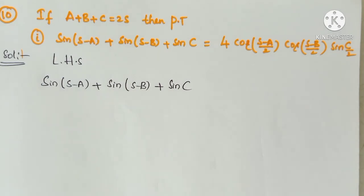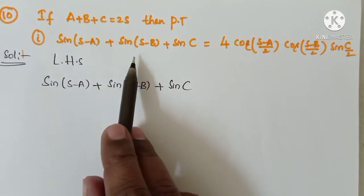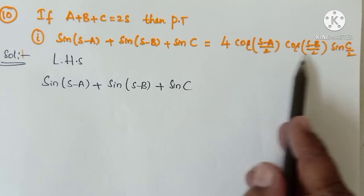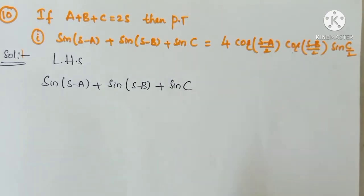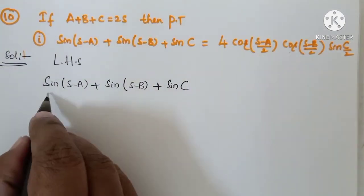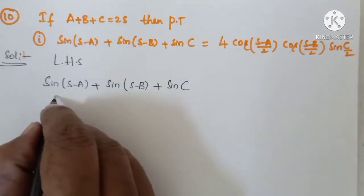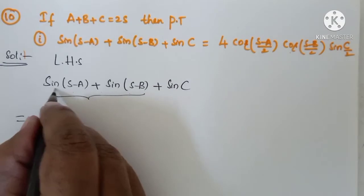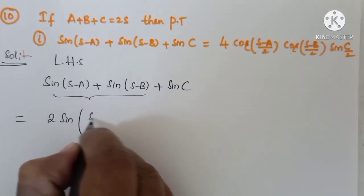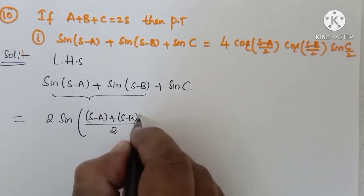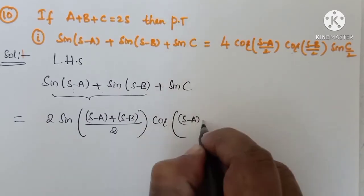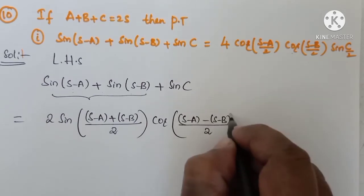Now the tenth question: If A plus B plus C equals 2s, then prove that Sin(s minus A) plus Sin(s minus B) plus Sin C equals 4 Cos((s minus A)/2) Cos((s minus B)/2) Sin(C/2). Students should also practice conditions A plus B plus C equals 180, 90, 0, and 270 degrees. We take LHS: Sin(s minus A) plus Sin(s minus B) plus Sin C. Applying Sin A plus Sin B formula: 2 Sin((A plus B)/2) Cos((A minus B)/2) plus Sin C.